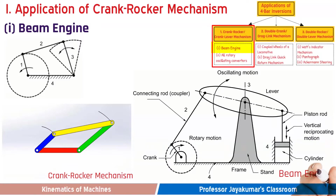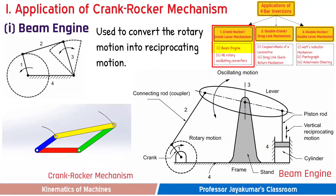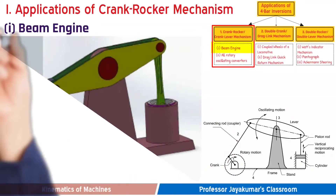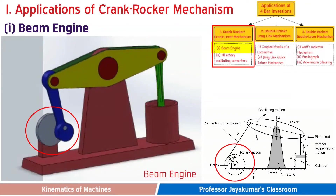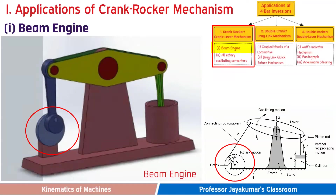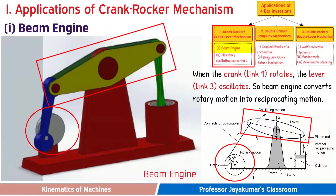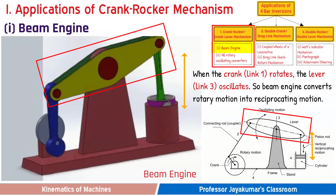The line sketch of the beam engine is given here. This beam engine is used to convert rotary motion into reciprocating motion. With the use of this animation, we will better understand the working of the beam engine. As you can see, the rotary motion of the input link, which is the crank, is converted into oscillatory motion of the lever, which is link 3. This oscillatory motion of the lever is then converted into reciprocating motion of the plunger in a cylinder, as shown in the animation.